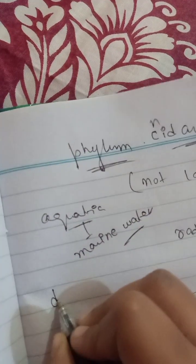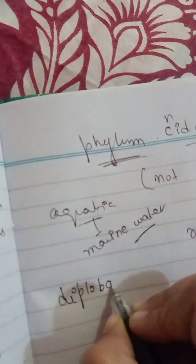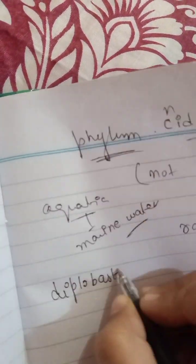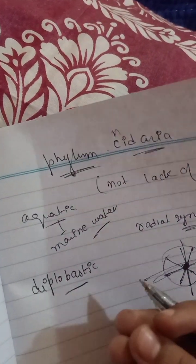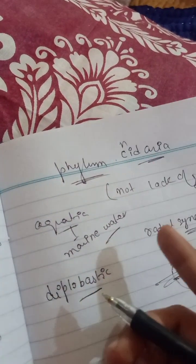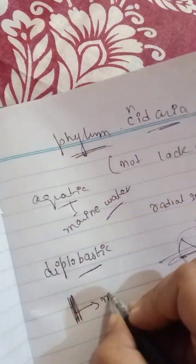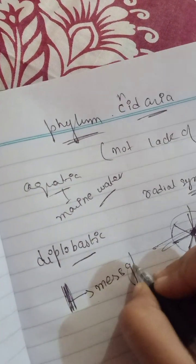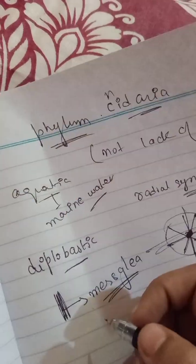They are basically diploblastic. What does that mean? It means they contain only two layers, which are the endoderm and ectoderm. The ectoderm is the outer one and the endoderm is the inner one. Between them there is a fluid which is the mesoglea.